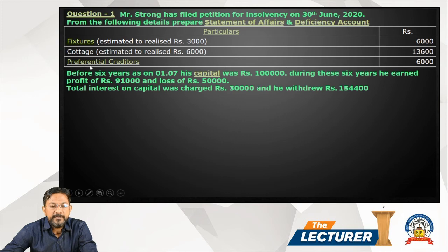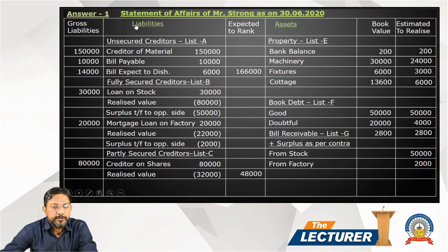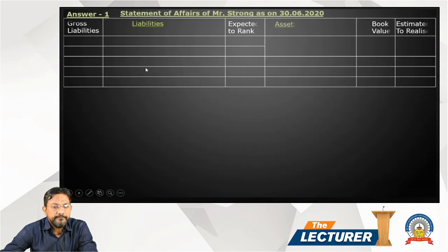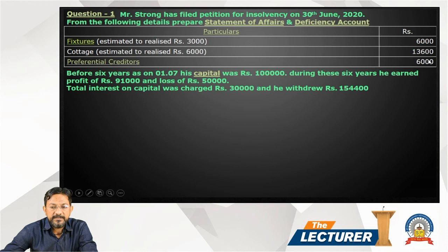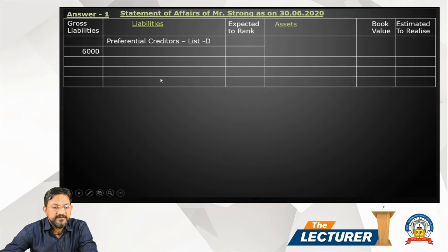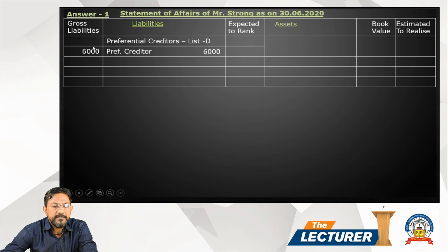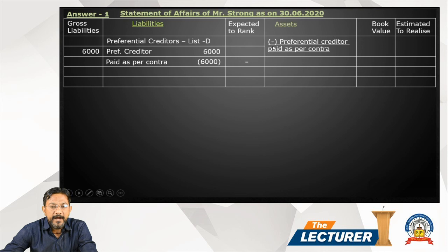Preferential creditors: as per List D, preferential creditors are 6,000. Statement of affairs — 6,000. This is the liability side and asset side. The liability side gross value is 6,000. Pay careful attention to the totals on both sides.